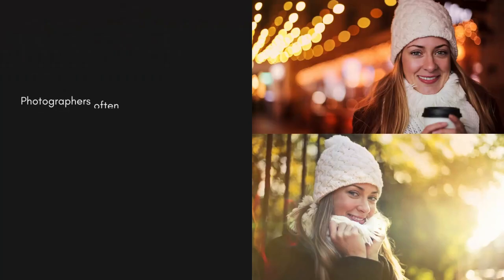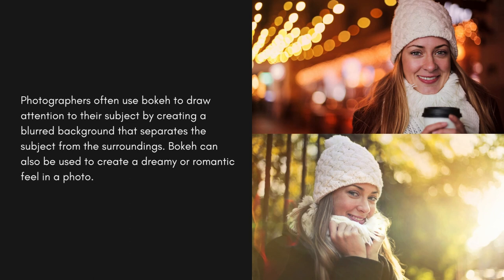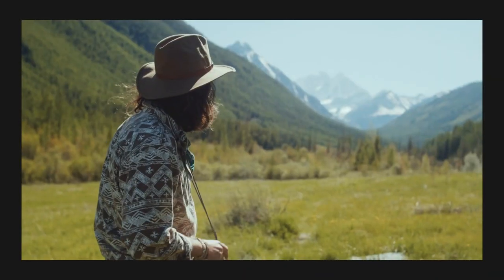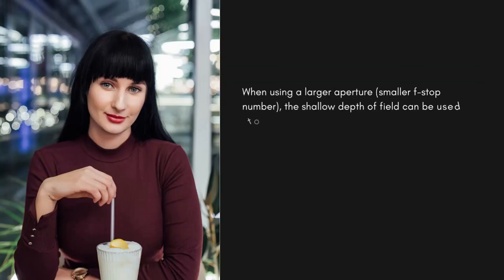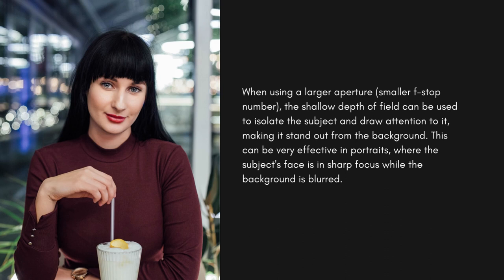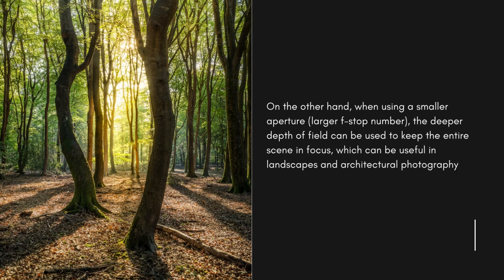Photographers often use bokeh to draw attention to their subject by creating a blurred background that separates the subject from the surroundings. Bokeh can also be used to create a dreamy or romantic feel in a photo. Always remember that aperture can affect the overall composition of an image. When using a larger aperture (smaller f-stop number), the shallow depth of field can be used to isolate the subject and draw attention to it — very effective in portraits where the subject's face is in sharp focus while the background is blurred. When using a smaller aperture (larger f-stop number), the deeper depth of field keeps the entire scene in focus, useful in landscapes and architectural photography.